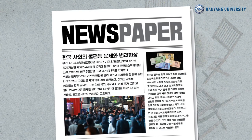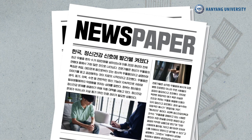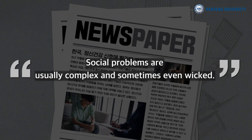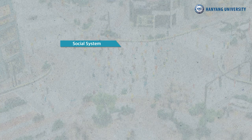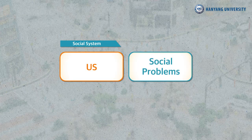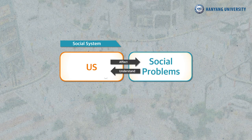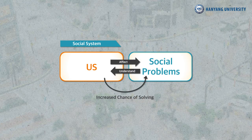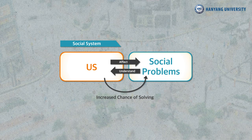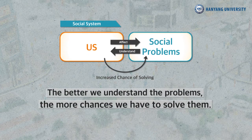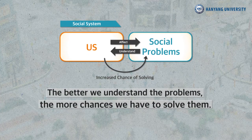Social problems mentioned above cannot be solved with simple solutions. Social problems are usually complex and sometimes even wicked. One caveat is that you and I are part of the system that created the social problems, and we are also affected by them. Therefore, the better we understand the problem, the more chances we have to solve it.